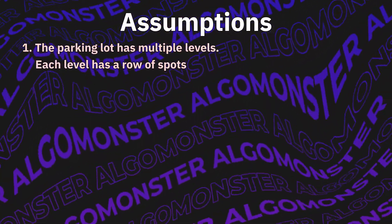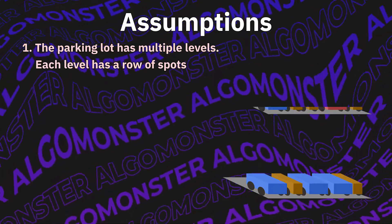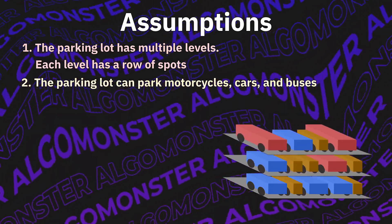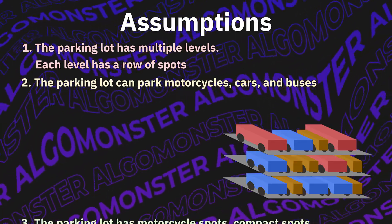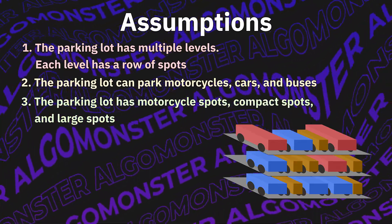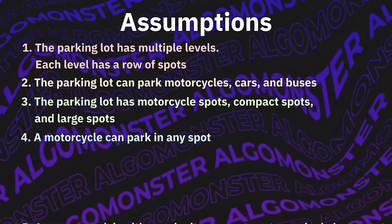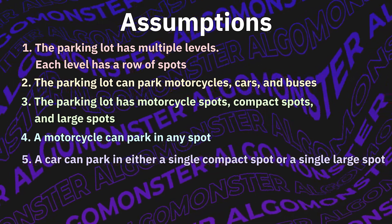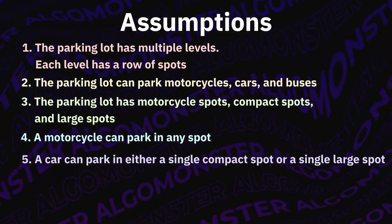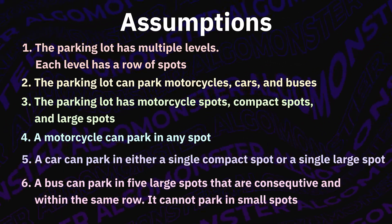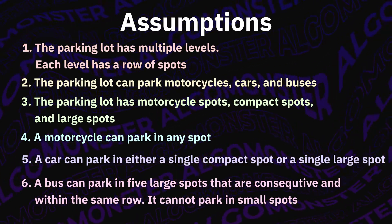One: the parking lot has multiple levels, and each level has a row of spots. Two: the parking lot can have motorcycles, cars, and buses. Three: the parking lot has motorcycle spots, compact spots, and large spots. Four: a motorcycle can park in any spot. Five: a car can park in either a single compact spot or a single large spot. Six: a bus can park in five large spots that are consecutive and within the same row — it cannot park in a small spot.